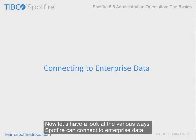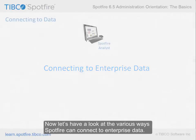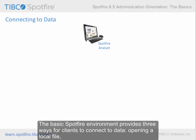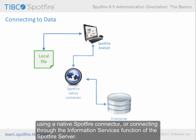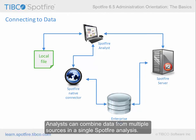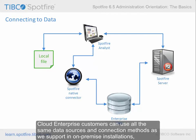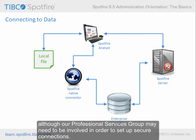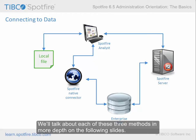Now let's have a look at the various ways Spotfire can connect to enterprise data. The basic Spotfire environment provides three ways for clients to connect to data: opening a local file, using a native Spotfire connector, or connecting through the information services function of the Spotfire server. Analysts can combine data from multiple sources in a single Spotfire analysis. Cloud Enterprise customers can use all the same data sources and connection methods as we support in on-premise installations, although our professional services group may need to be involved in order to set up secure connections.